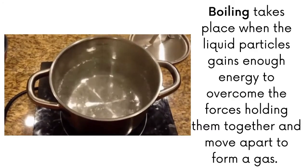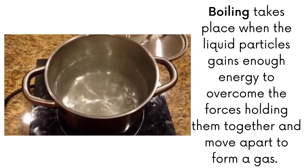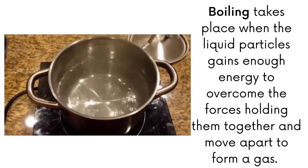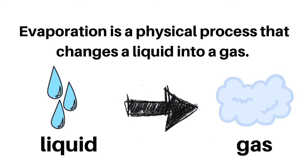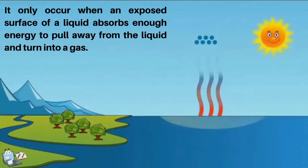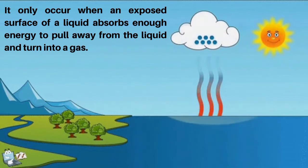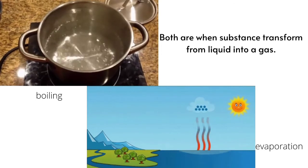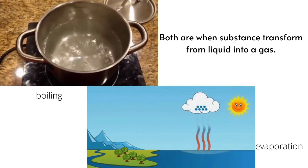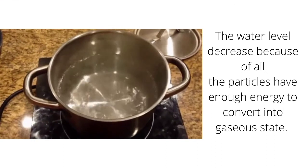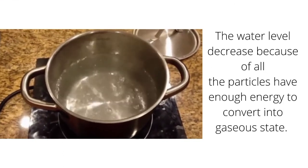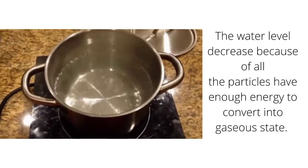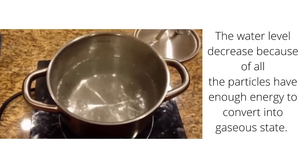Do you know the difference between evaporation and boiling? Boiling takes place when liquid particles gain enough energy to overcome the forces holding them together and move apart to form a gas. Evaporation is a physical process that changes a liquid into a gas; it only occurs when an exposed surface of a liquid absorbs enough energy to pull away and turn into a gas. Think of a boiling point of water — the water level decreases because all the particles have enough energy to convert into a gaseous state.